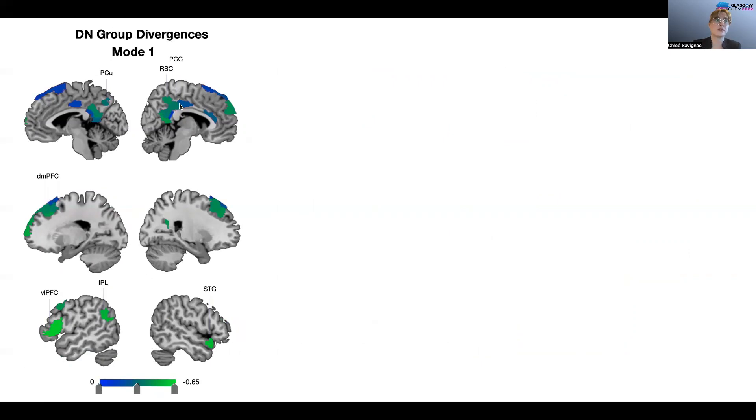retrosplenial cortex, and posterior cingulate cortex, as well as in frontal midline structures such as the dorsal medial prefrontal cortex. We also see some more lateral hits to the ventrolateral prefrontal cortex, inferior parietal lobule, and superior temporal gyrus.